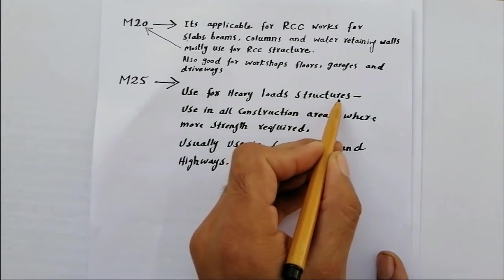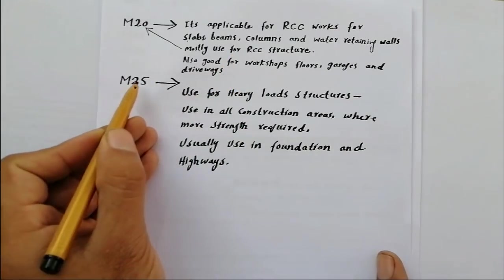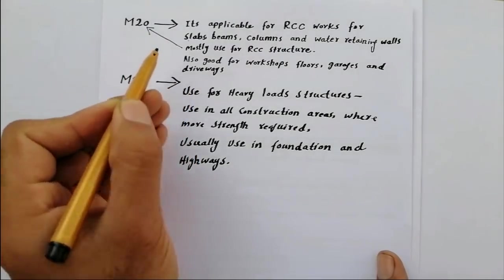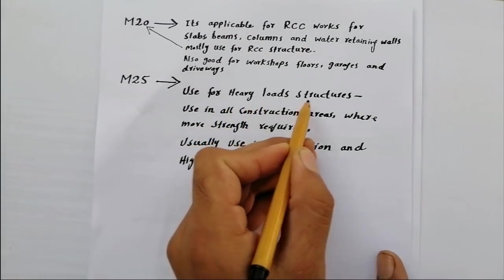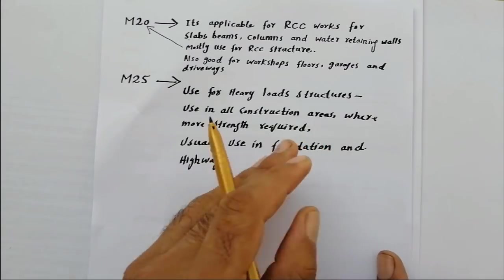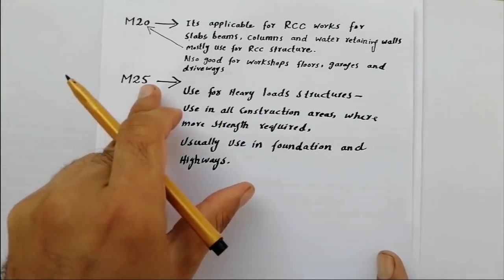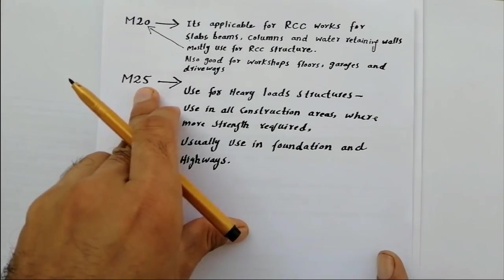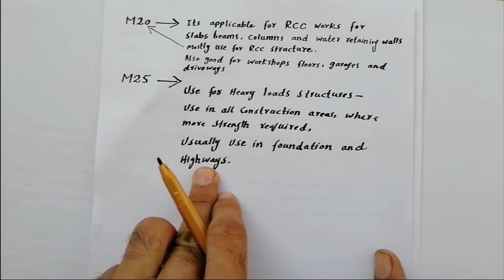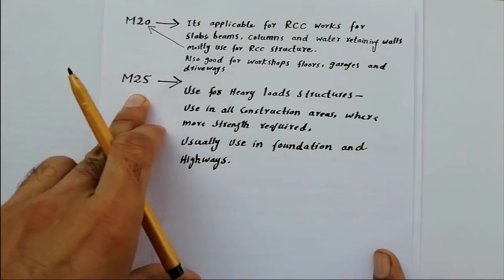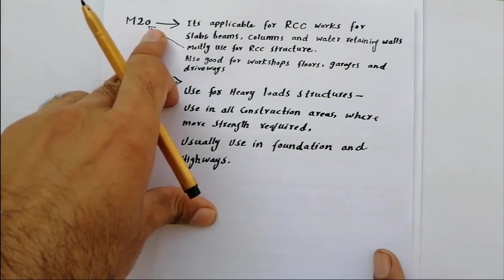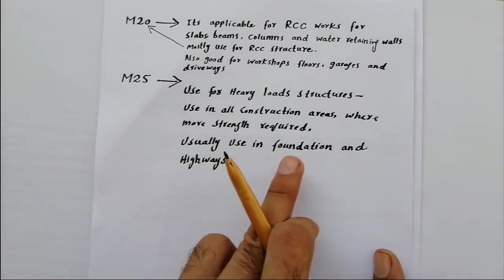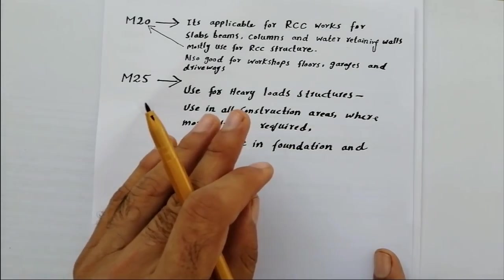M25 is used for heavy load structures. It is stronger than M20 — M25 has a compressive strength of 25 N/mm² while M20 has 20 N/mm². M25 is used in all construction areas where more strength is required. It is usually used in foundations and highways. Note that M25 is more expensive than M20, but it is also much stronger.